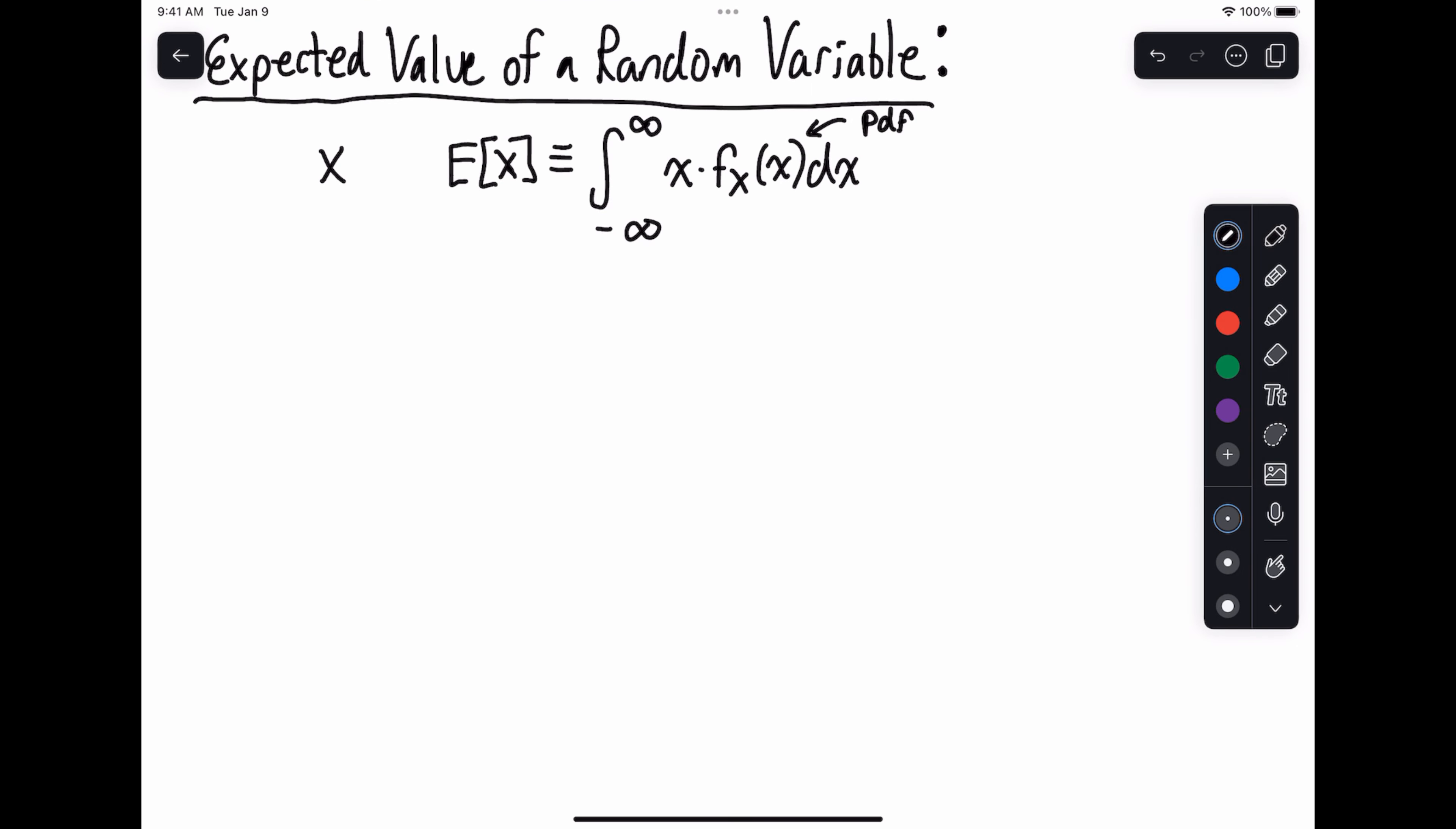Notice how if I didn't multiply this by x, if I just had the integral from minus infinity to infinity of f of x, I would just get one because that would be integrating over the probability distribution.